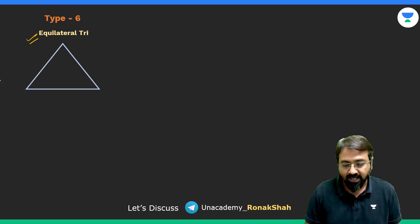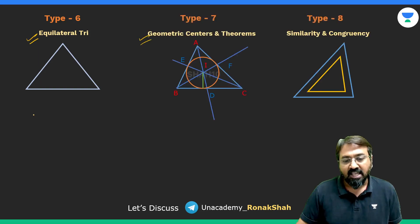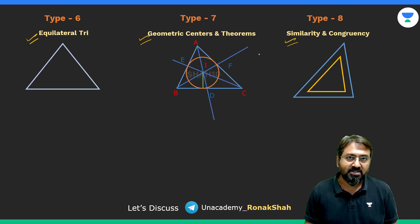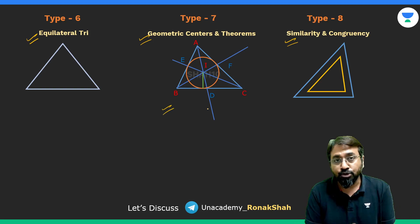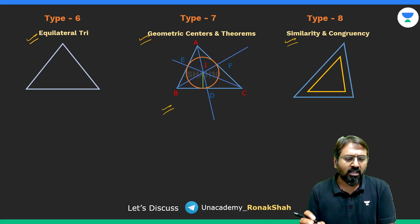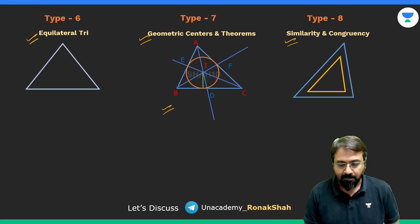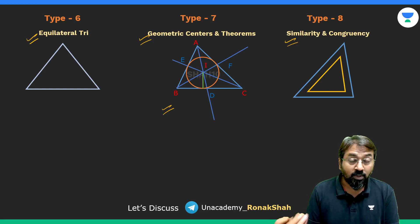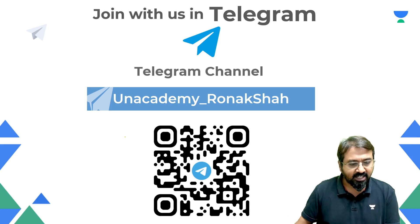In this part we'll discuss equilateral triangle in detail, then we'll look at geometric centers and theorems, and we'll look at similarity and congruency. It's going to be slightly more detailed, particularly the geometric centers because there are four geometric centers with theorems and properties. It will take about 12 to 15 minutes to complete this, and similarity and congruency is a simple concept which we'll understand through examples.